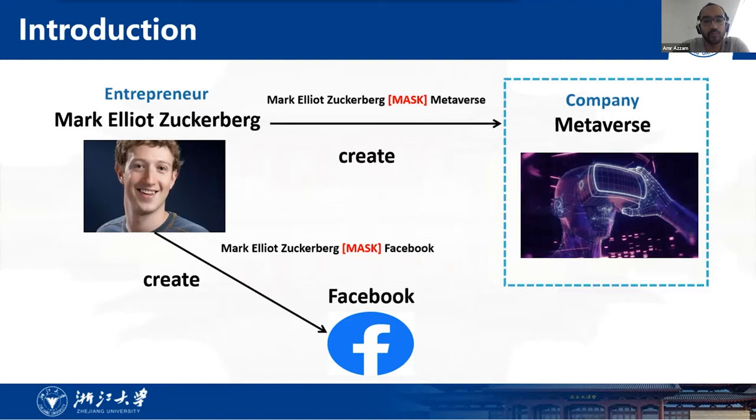Here is an example. With large-scale pre-training, language models may contain some kind of knowledge. Given the instance, Mark Elliott Zuckerberg [MASK] Facebook, the model can easily infer that the most likely word is created in the mask position. However, Facebook was renamed Metaverse a few months ago. Without such knowledge, it is difficult to predict the relation between Zuckerberg and the Metaverse. With the help of external ontology which provides descriptions and types about Zuckerberg and Metaverse, the model may infer such a relation.